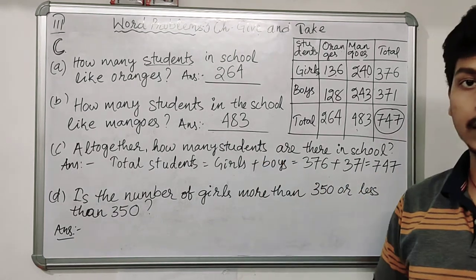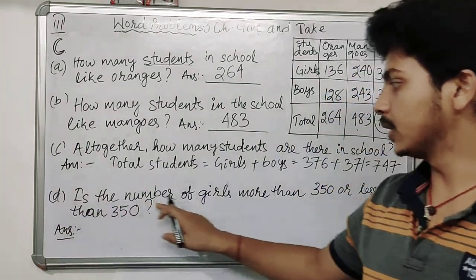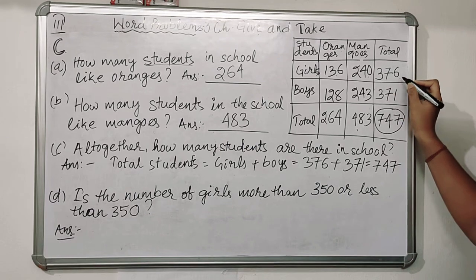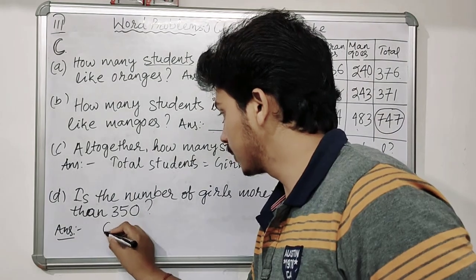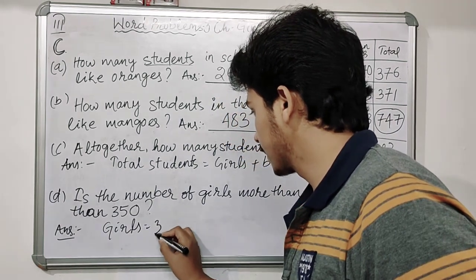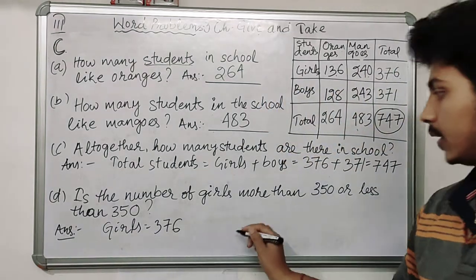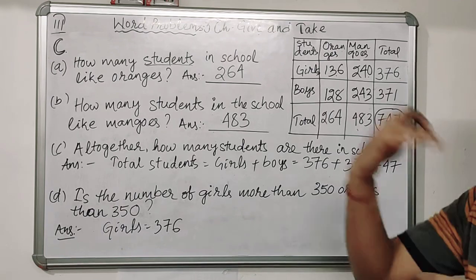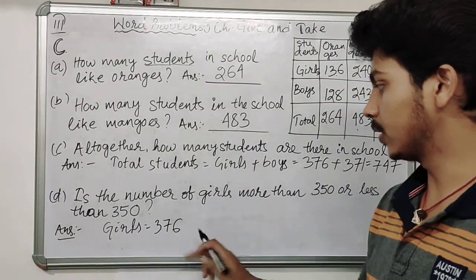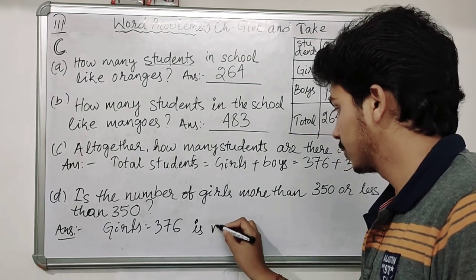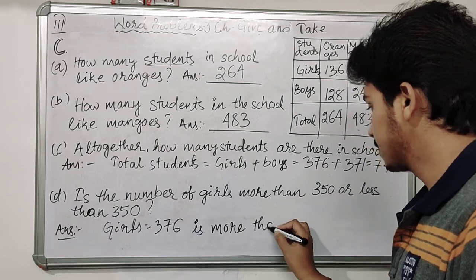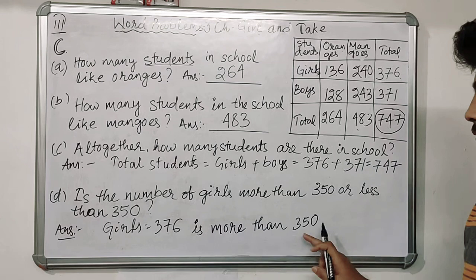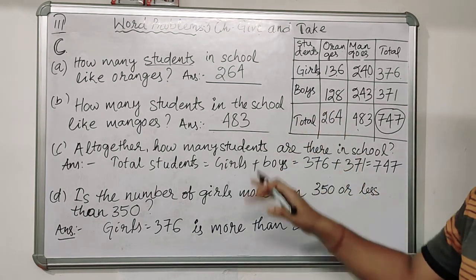Question D: is the number of girls more than 350 or less than 350? The number of girls is 376. Now, is 376 more than 350 or less than 350? As we know, 376 is more than 350. So the total number of girls, which is 376, is more than 350.